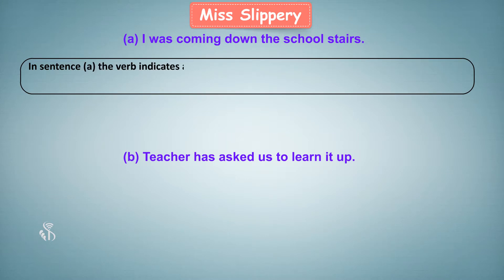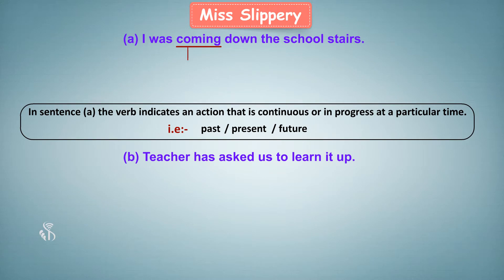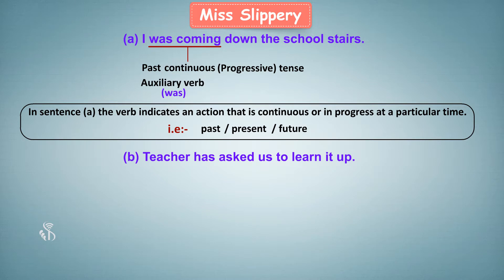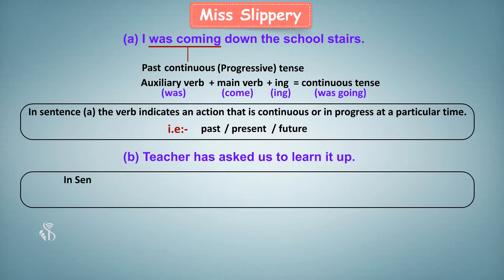In sentence A, the verb indicates an action that is continuous or in progress at a particular time — that is, past, present, or future. The verb is said to be in continuous, or progressive, tense. 'Was coming' is an example of past continuous tense.